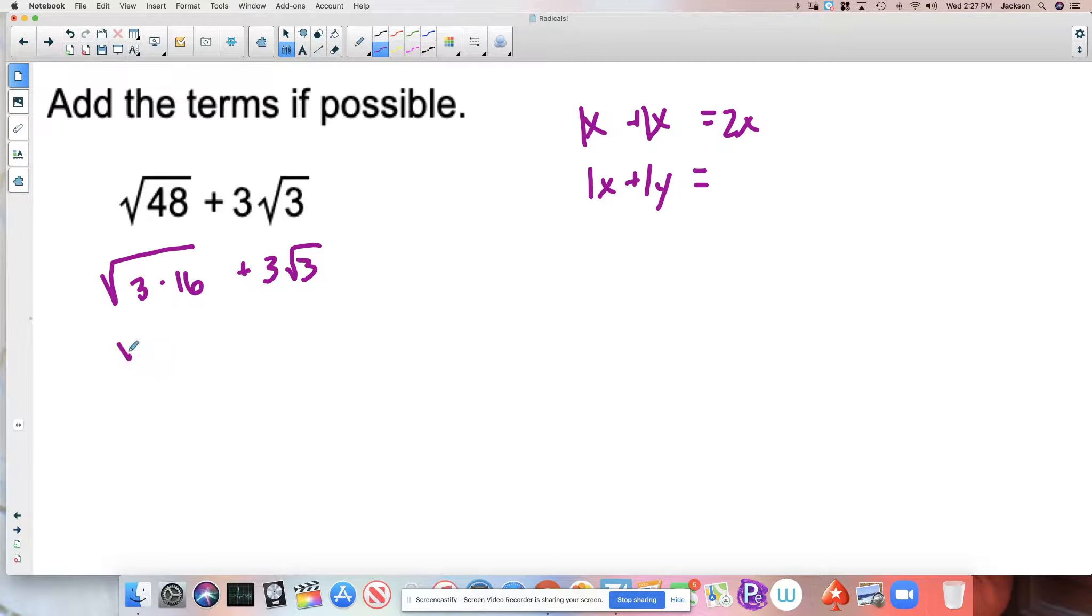Now this becomes the square root of 3 using the product rule. The square root of 3 times the square root of 16. Okay, and the square root of 16 is 4, right? So I end up with the square root of 3 times 4 plus 3 radical 3.